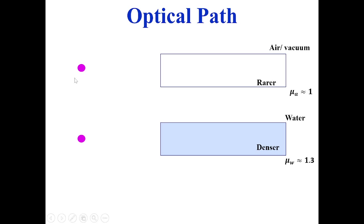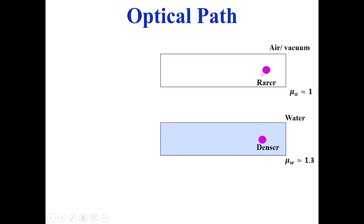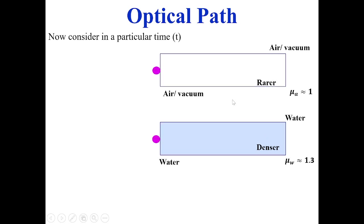Now we are going to consider two particles moving in these two mediums and observe how their velocity changes. Imagine these two particles moving in vacuum or air medium — both have the same velocity. But when one particle enters the denser medium (water), its velocity will be reduced compared to the particle remaining in air. Consider a particular time t — that may be one second, two seconds, three seconds, whatever.